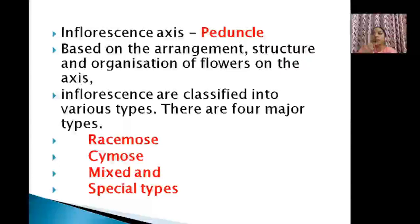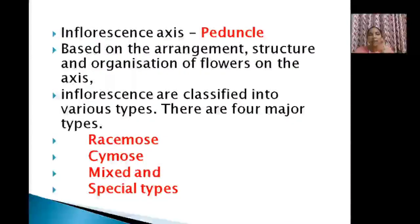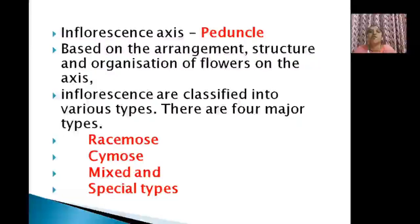There is an axis on which flowers are arranged and it can be arranged in different ways. When you look at Cassia fistula or jasmine flowers, there is a particular pattern. Based on the flower arrangement in the axis, there are mainly four types of inflorescence: racemose inflorescence, cymose inflorescence, mixed type, and special types.